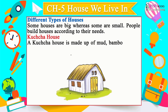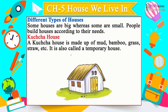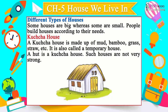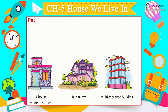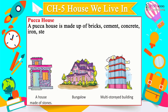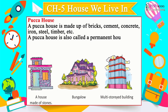Kaccha House: A kaccha house is made of mud, bamboo, grass, straw, etc. It is also called a temporary house. A hut is a kaccha house — such houses are not very strong and are mostly found in villages. A pakka house is made of bricks, cement, concrete, iron, steel, timber, etc. and is also called a permanent house — these houses last very long.